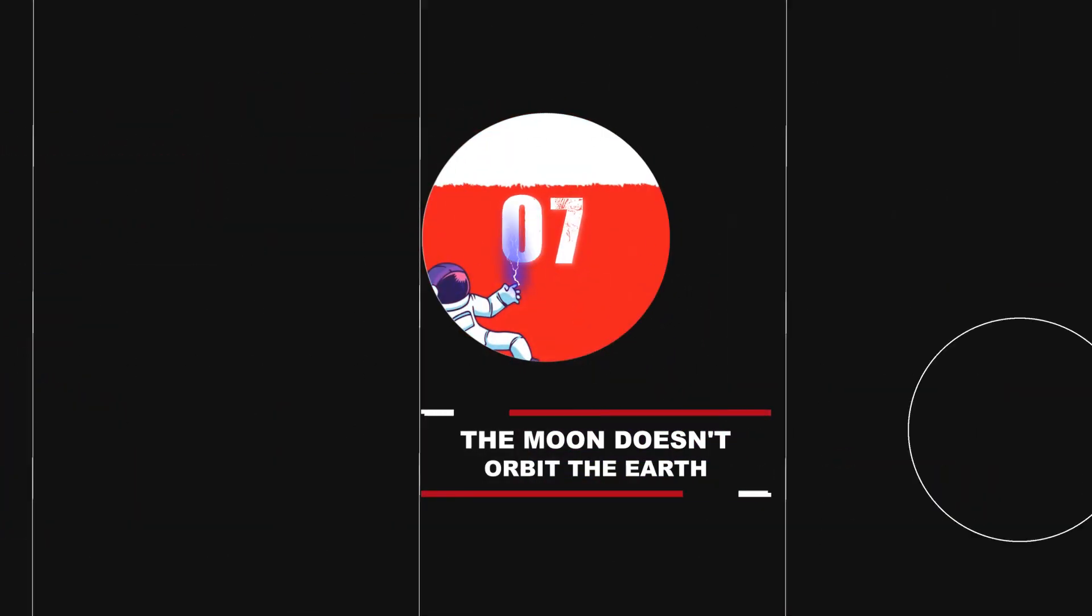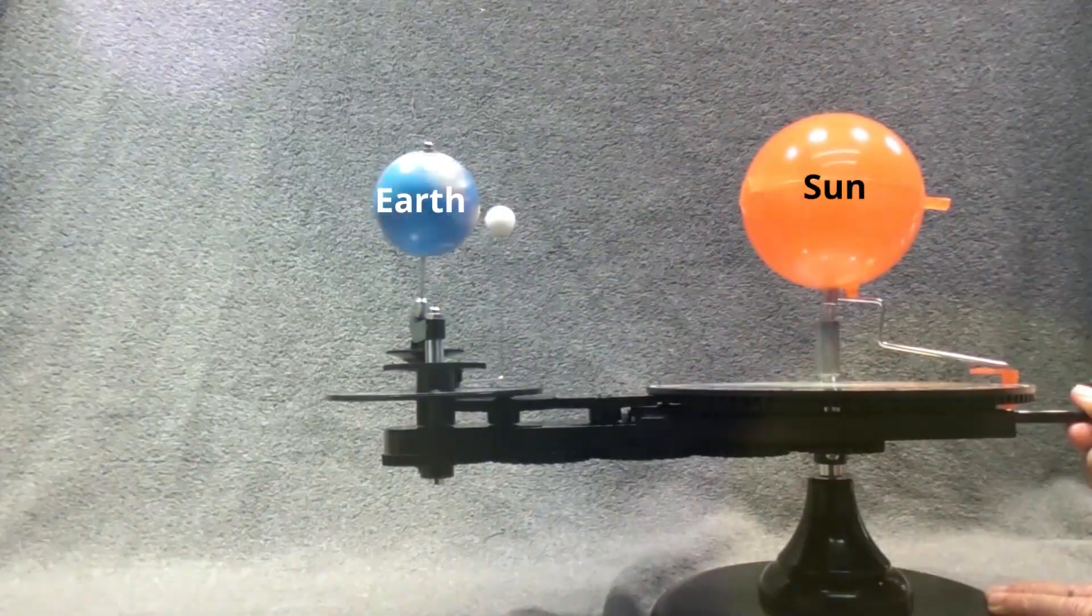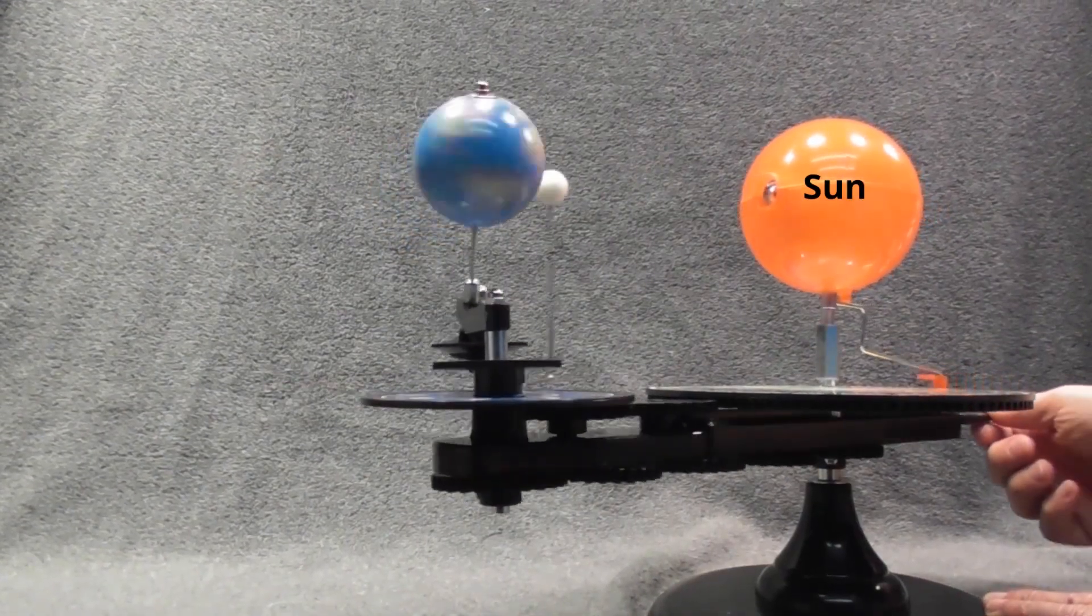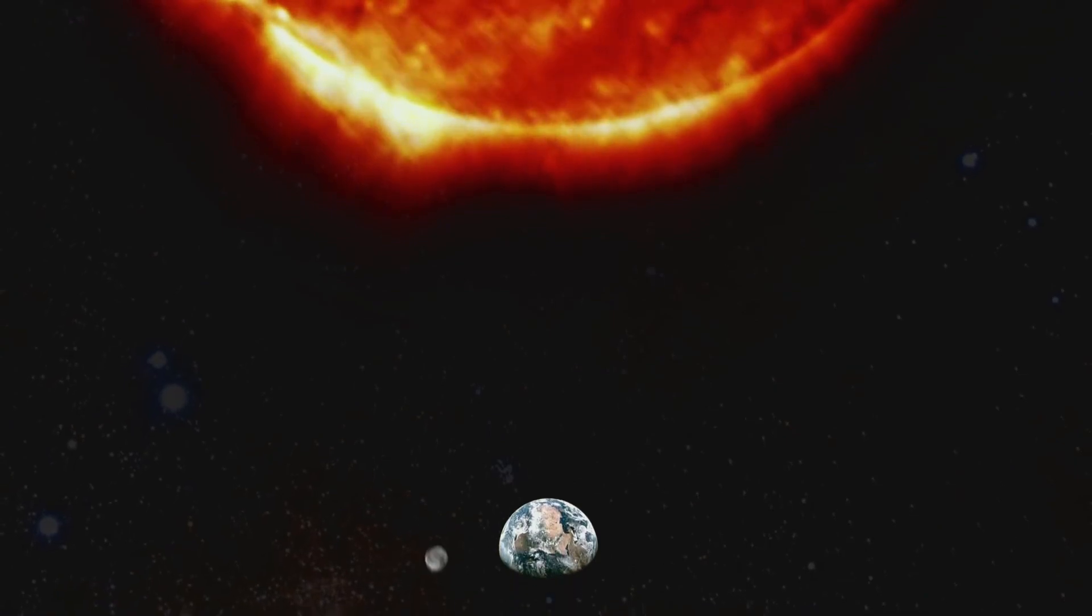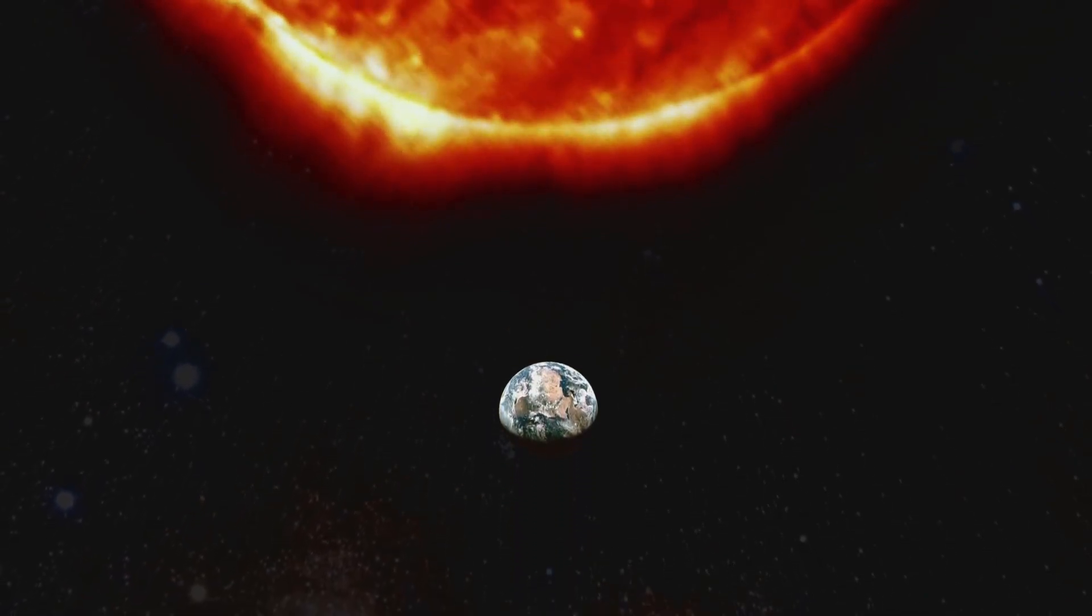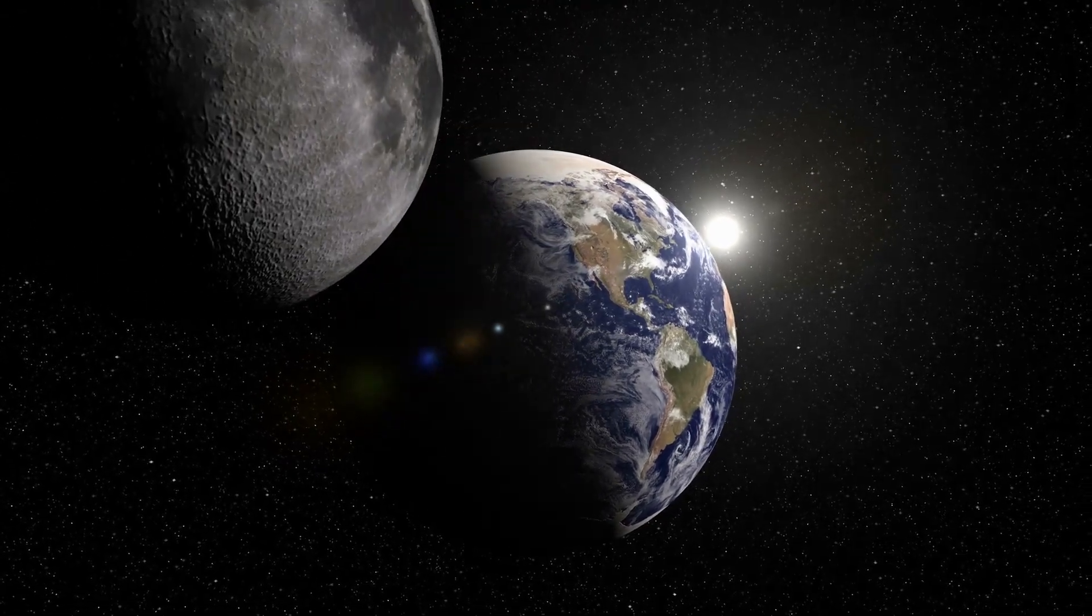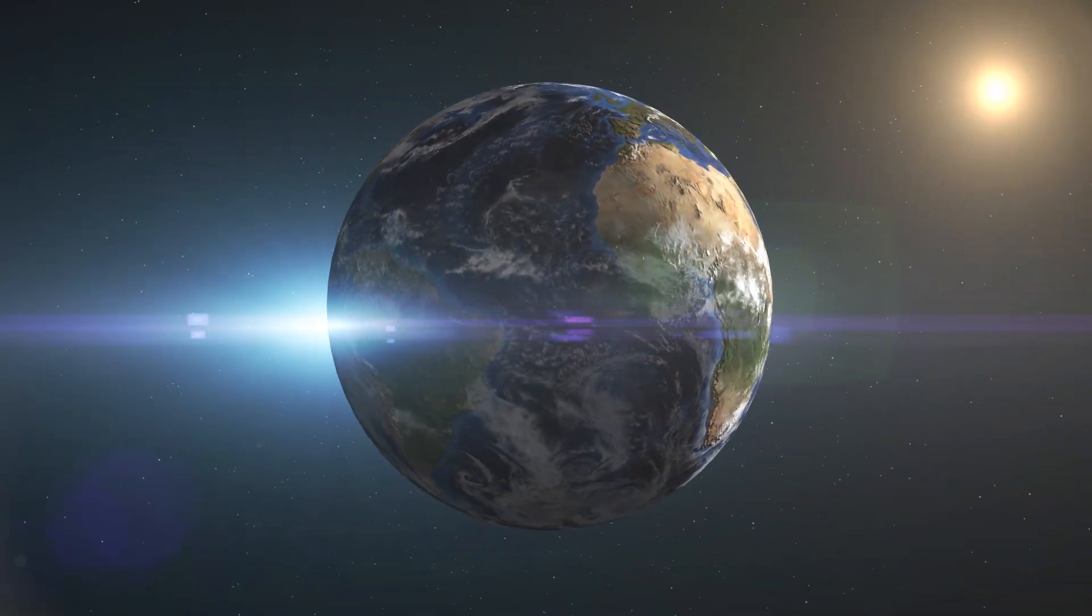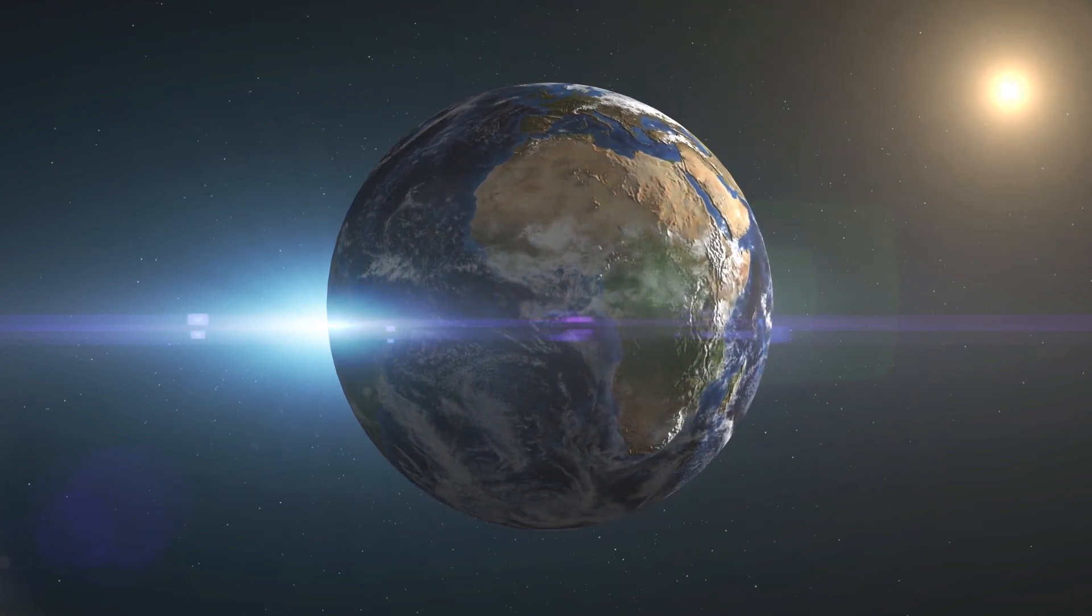Number 7: The Moon doesn't orbit the Earth. Instead, it travels with our planet, sometimes behind, sometimes ahead, as Earth revolves around the Sun. In fact, the Sun rules the Moon's motion.